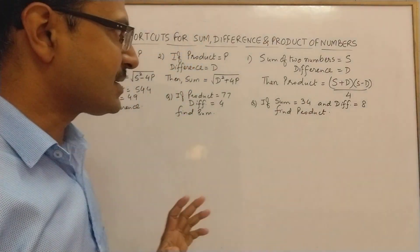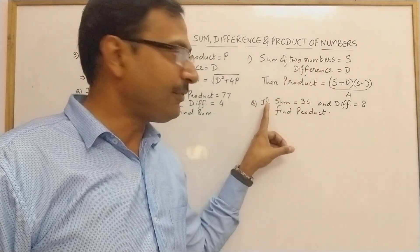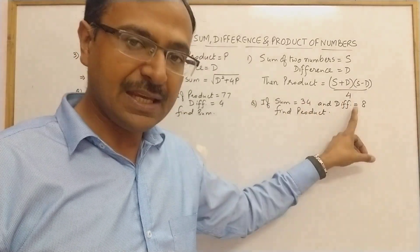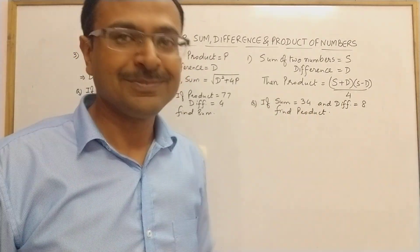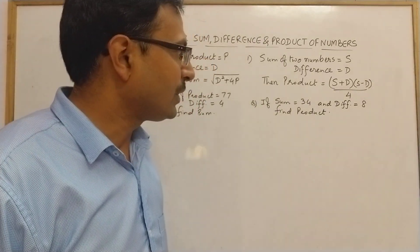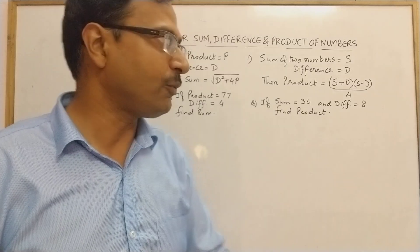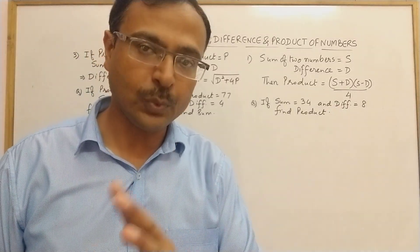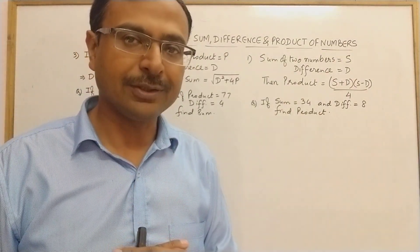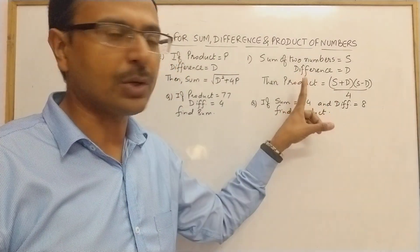In the first case, the sum of two numbers is 34 and their difference is 8, find their product. Most students will assume the numbers to be x and y, then write x+y=34 and x-y=8, find x and y, and multiply them to get the product. Here is the shortcut.